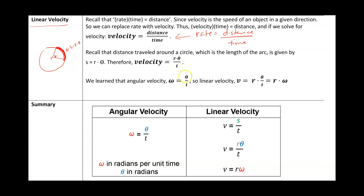Since omega — angular velocity — equals theta over time, we can rewrite velocity as r times theta over time, where theta over time is angular velocity. Therefore, linear velocity equals the radius times omega, which is the angular velocity.